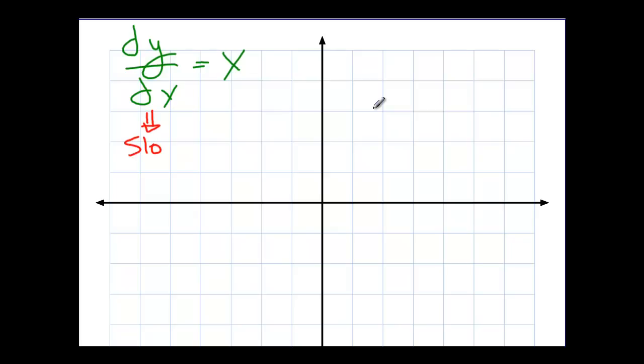We can think about dy/dx as the instantaneous rate of change. We can think about it as the slope at a point on the graph. And what this particular equation says is that the slope at any point on this graph will simply be equal to the x coordinate of that point.